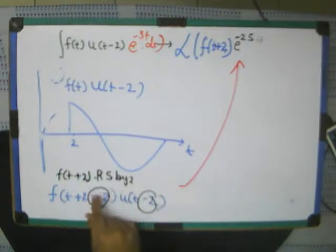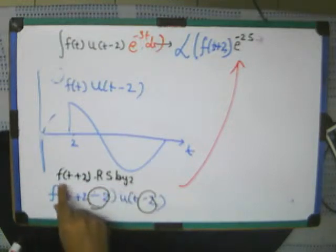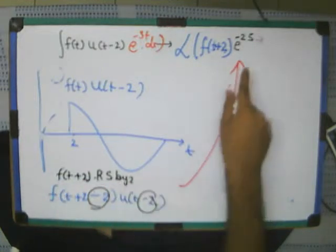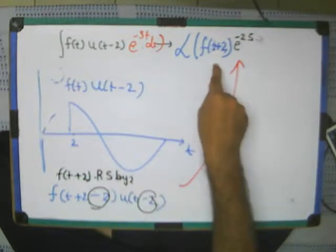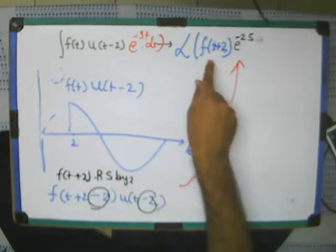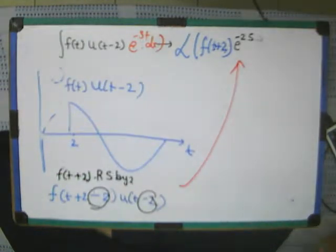So, F of t plus 2, this was one technique which was introduced by me. F of t plus 2, right shifted by 2. So, right shifted by 2 means e raised power minus 2s. F of t plus 2, the Laplace transform, I have to take. F of t plus 2, the Laplace transform multiplied by e raised power minus 2s. Simple as that.